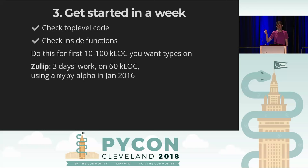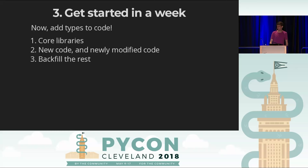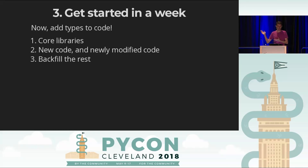A lot of those three days were spent filing bugs, which are now fixed — so this will be quicker in 2018. Once you've done that, you can start adding types to code bit by bit, file by file, and get the benefit of being able to see what the types are as you read code and understand it much faster. The general strategy is to start with core libraries and core abstractions — things called by tons of code.